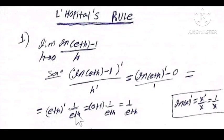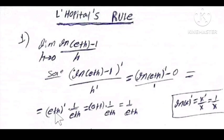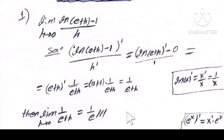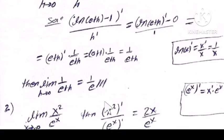By this rule, the derivative of the inner part (e+h): e is a constant so its derivative is 0, and the derivative of h is 1. Therefore 0 plus 1 equals 1. So we get 1 times 1 over (e+h), which equals 1 over (e+h).